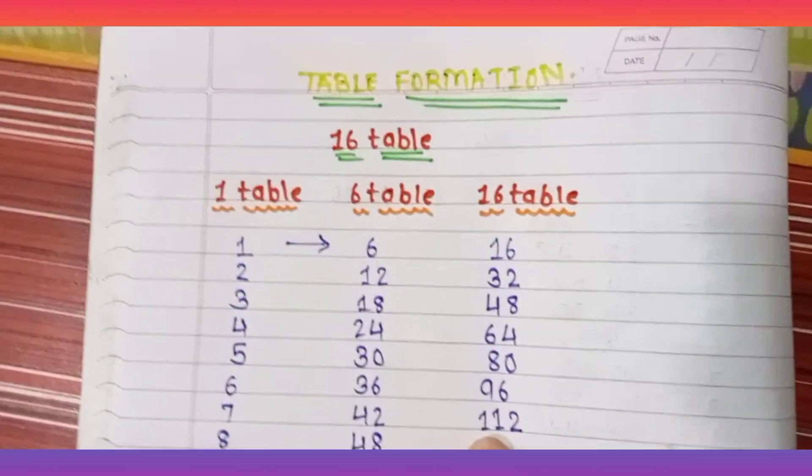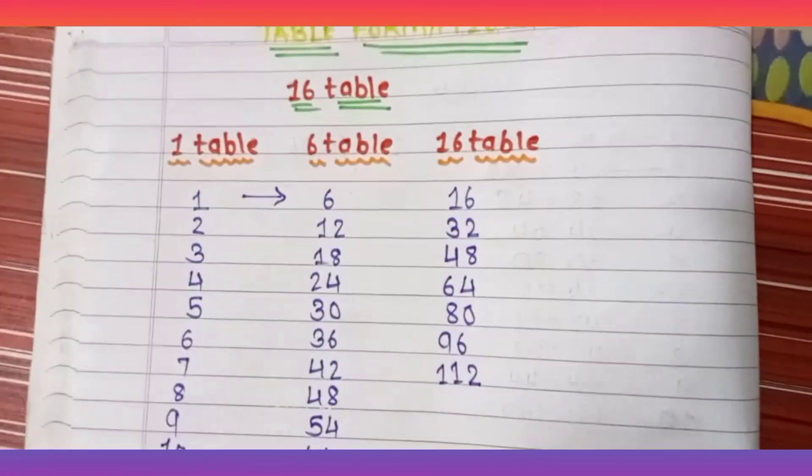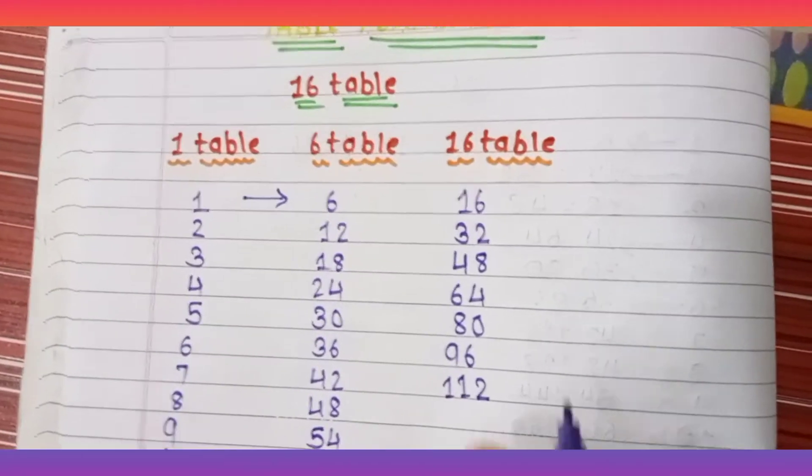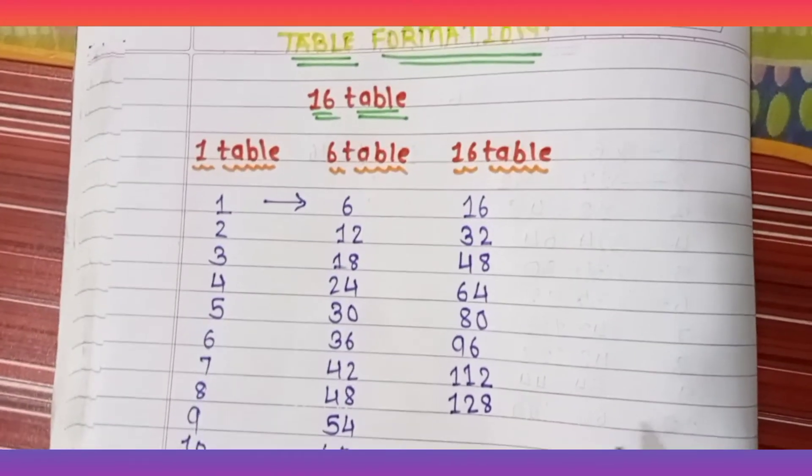7 plus 4 is 11. You will write 11 and 2 as it is. Don't get confused because why 11 came—you have to write as it is: 11.